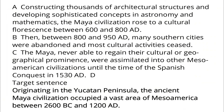A. Constructing thousands of architectural structures and developing sophisticated concepts in astronomy and mathematics, the Maya civilization rose to a cultural fluorescence between 600 and 800 AD. B. Then, between 800 and 950 AD, many southern cities were abandoned and most cultural activities ceased.